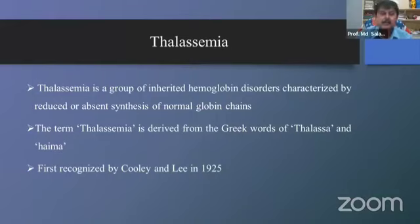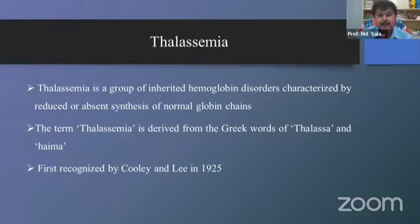Thalassemia is related to reduced production of the polypeptide chain — alpha or beta globin chain. Hemoglobinopathy is related to the structural defect of hemoglobin. The word thalassemia comes from the Greek words 'thalassa' (sea) and 'haema' (blood). It was first recognized by Cooley and Lee in 1925.